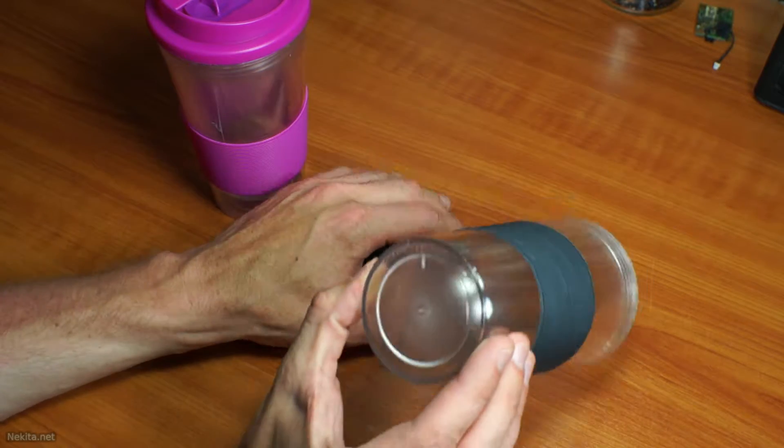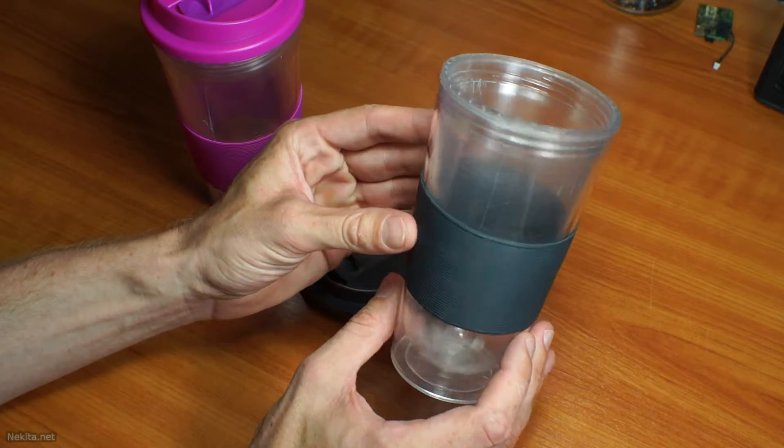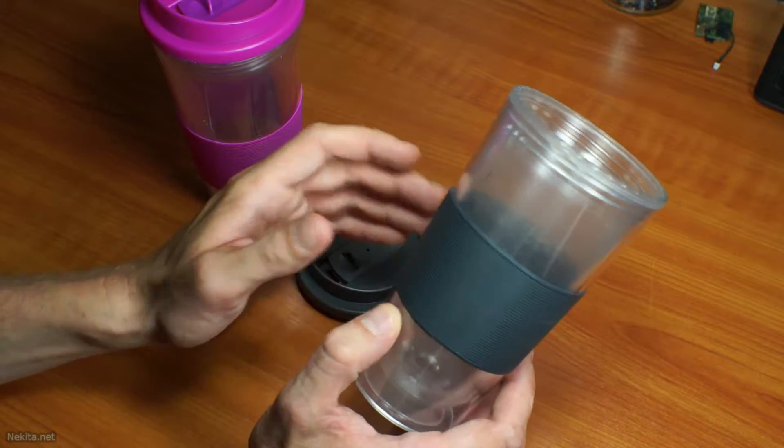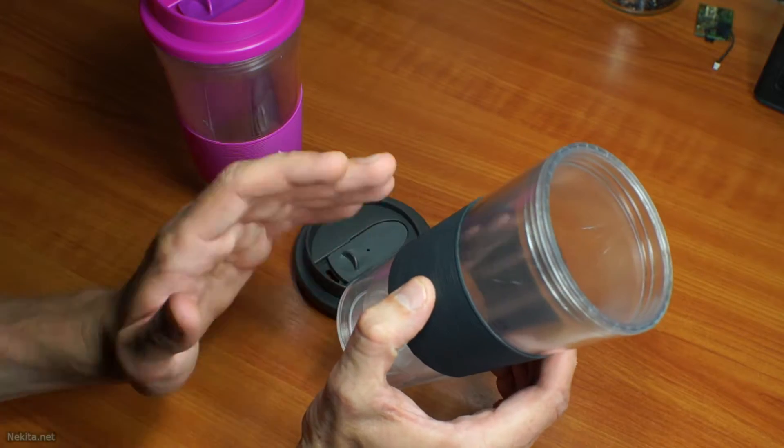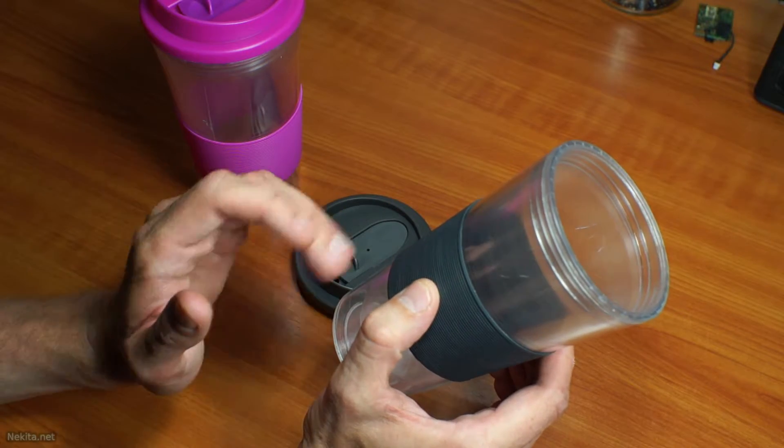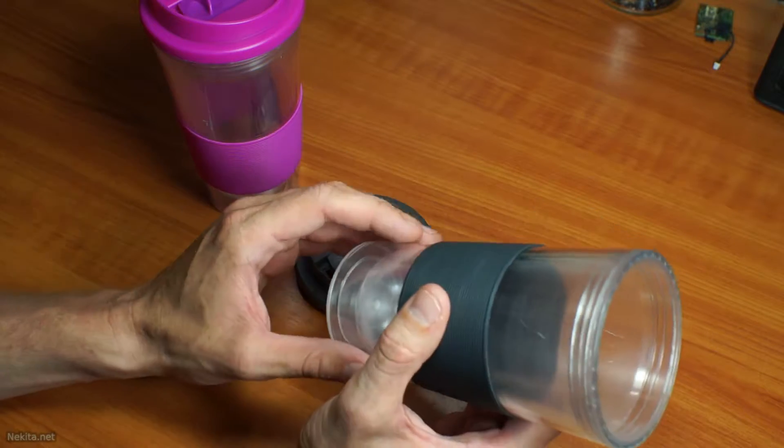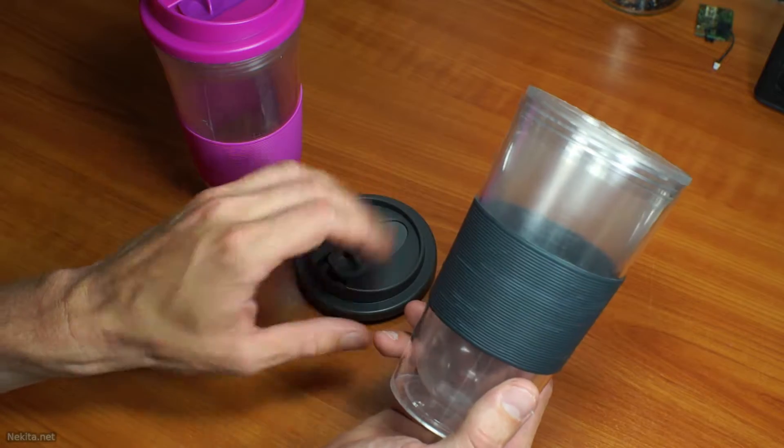It states on the bottom that you have to hand wash them and can't microwave them. It has a silicon little sleeve for those people who think it might be hot, or perhaps that's a better explanation, to prevent it from slipping out of your hands when it's wet. It's a nice detail.